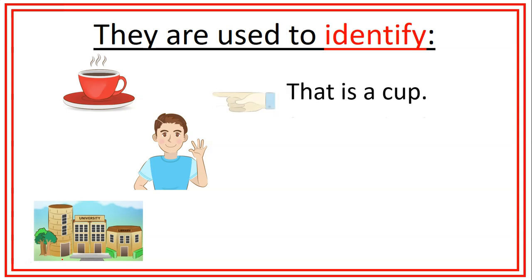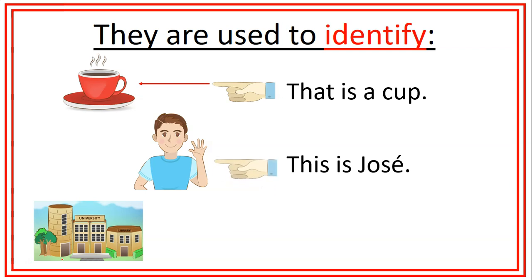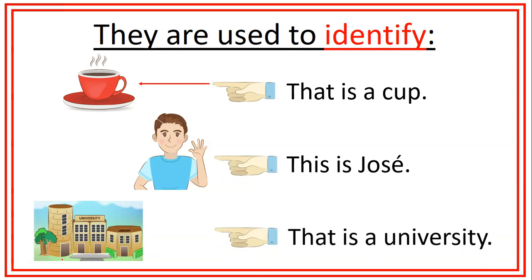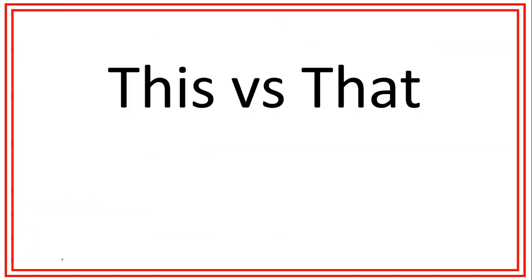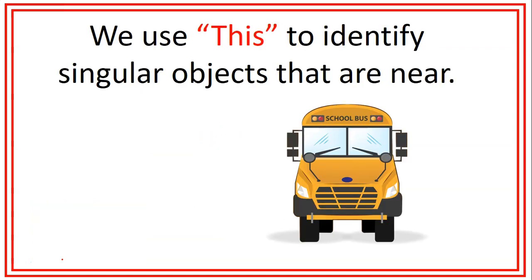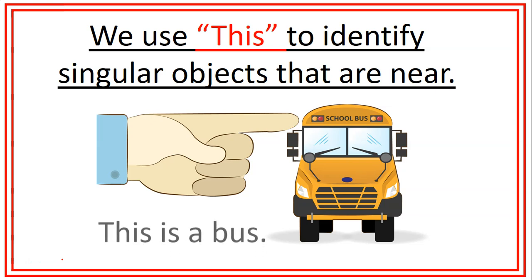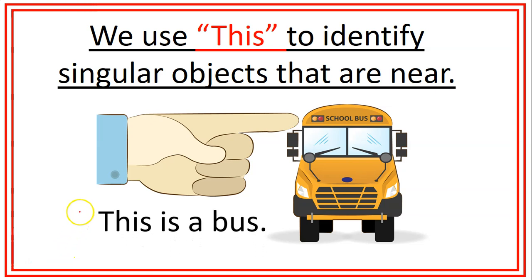For example, that is a cup, this is José, and that is a university. Now, let's see how they work and their differences. We use this to identify singular objects that are near. For example, this is a boss. Remember that we are talking about singular objects, so we need to use this and the word a or an, depending on the next word. If the word starts with a consonant like boss, we use a, but if the word starts with a vowel, we need to use an.